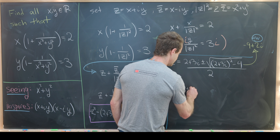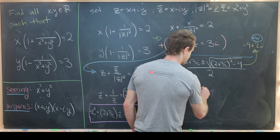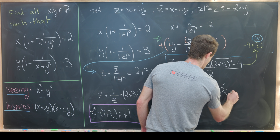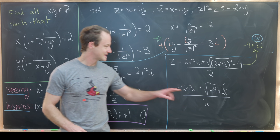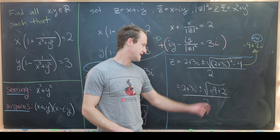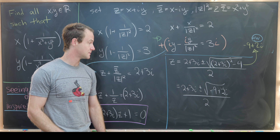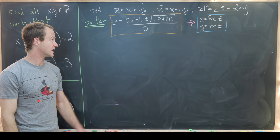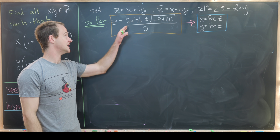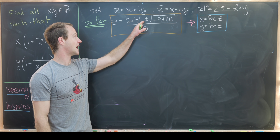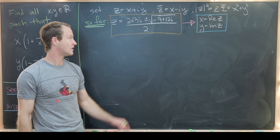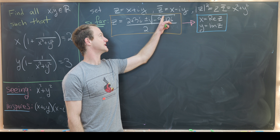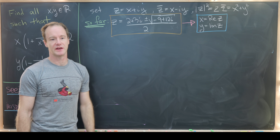So z equals (2 + 3i) ± √(−9 + 12i), all over 2. There was a typo on the last board — it showed 2i when it should have been 12i. Our goal is to extract the real and imaginary parts of this number.